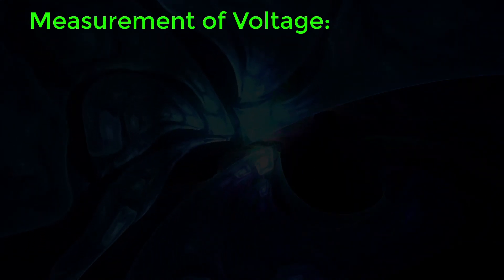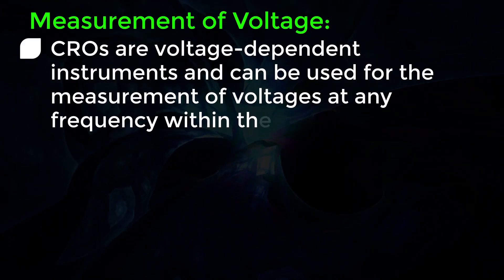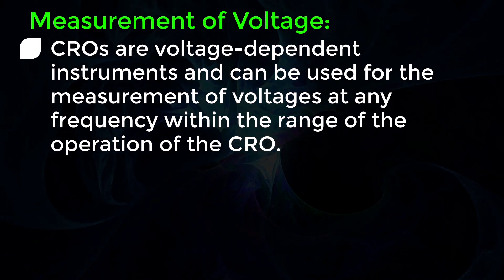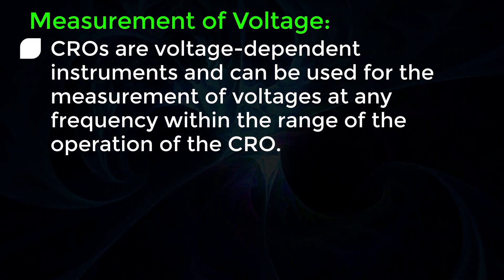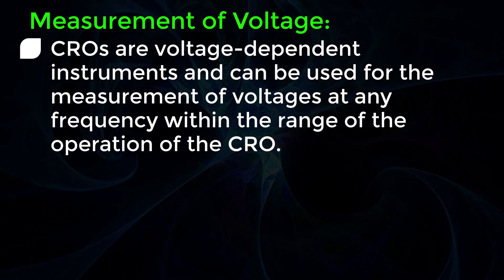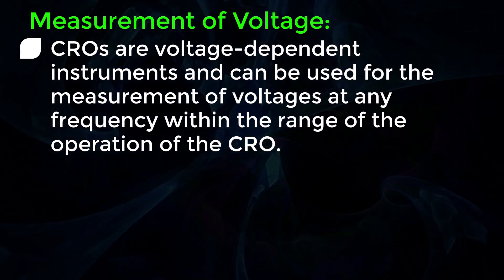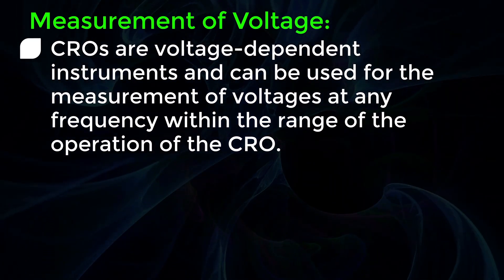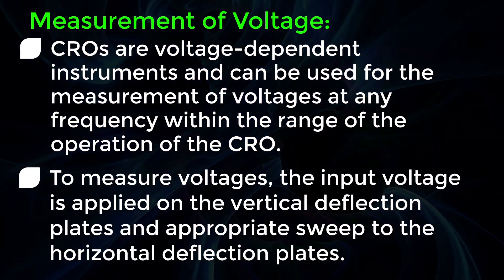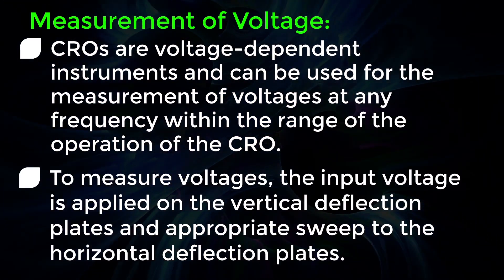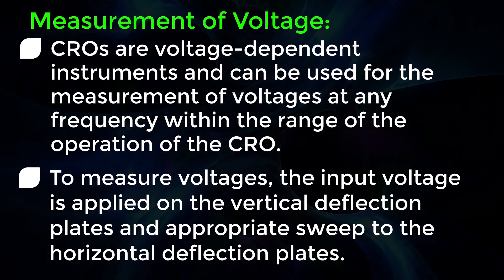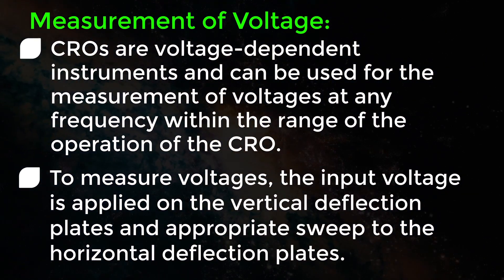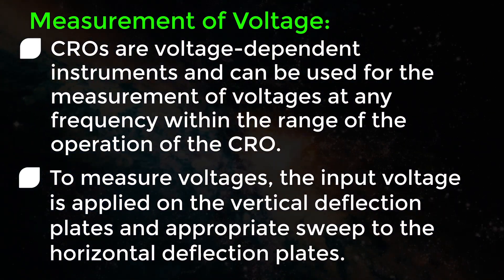The next is measurement of voltage. CROs are voltage-dependent instruments and can be used for the measurement of voltages at any frequency within the range of operation of the CRO. To measure voltages, the input voltage is applied on the vertical deflection plates and appropriate sweep to the horizontal deflection plates.